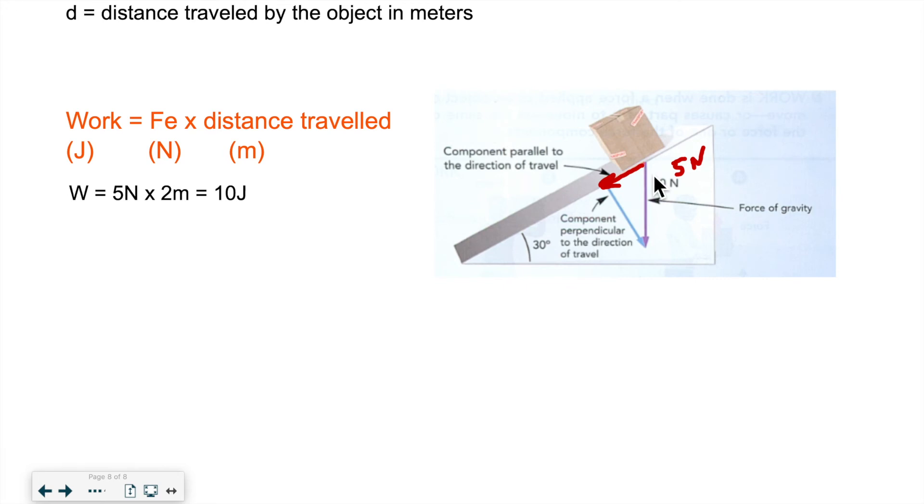So if we have a box here and this box, we calculated the effective force to be 5 newtons. Well, if the effective force on the box is 5 newtons, and let's say it traveled for 2 meters down this slope, down this plane, so we would do 5 newtons, which is the effective force, times 2 meters, which is the distance traveled. So this whole movement really involved 10 joules of energy, or 10 joules of work, since work is a type of energy.